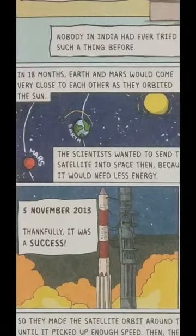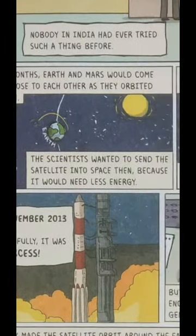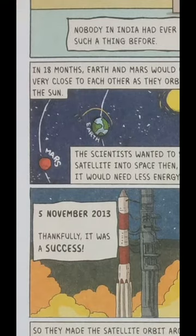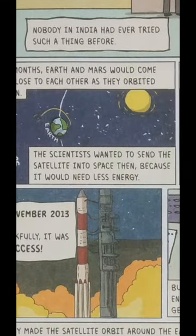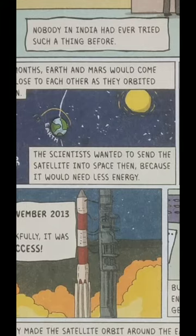In 18 months, Earth and Mars would come very close to each other as they orbited the Sun. The scientists wanted to send the satellite into space at that time because it would need less energy. When Mars and Earth are at their closest distance while orbiting the Sun, that is the best time to launch, so they would spend less energy sending the satellite to space.